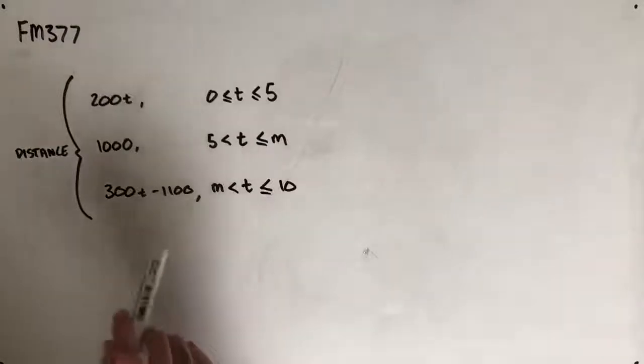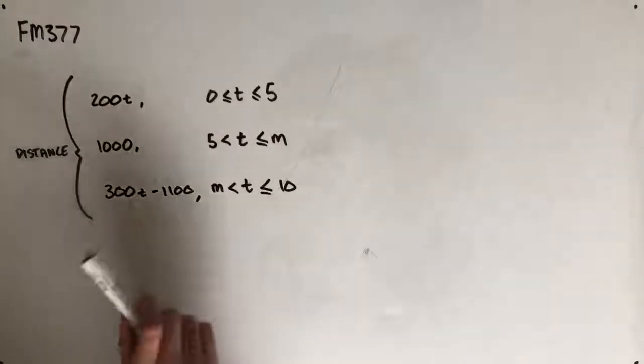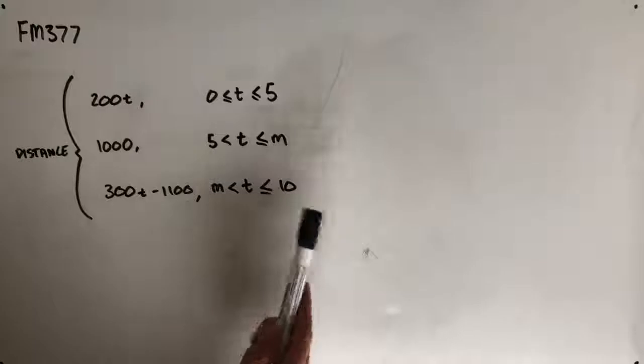This question reads, Olivia rides her bike to swim training each morning. The pool that Olivia trains at is 1,900 meters away from her house. The equation for the relationship between the distance in meters that Olivia is from her house, 10 minutes after leaving, is this.